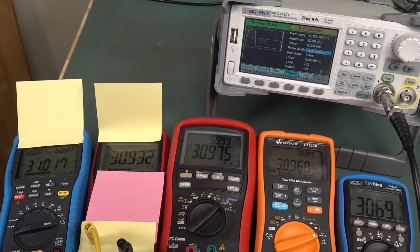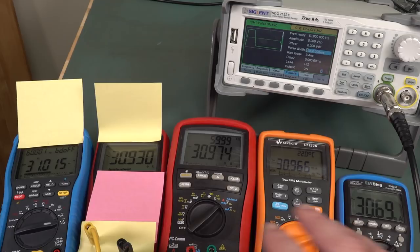This is not something you'd ordinarily measure with a multimeter, very short pulses like this. Ordinarily something like this you'd get peak capture. But multimeters aren't really designed for this, you'd use a scope. But it's just an interesting thing, so I'm going to compare them all.